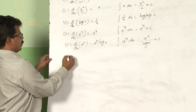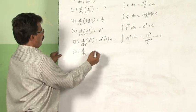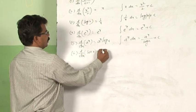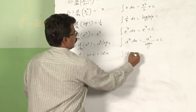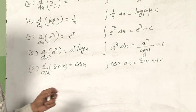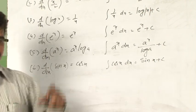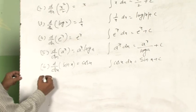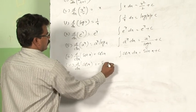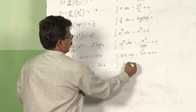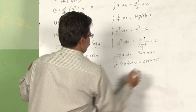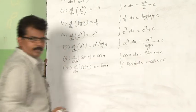Next, d by dx of sin x is equal to cos x. Therefore, integral of cos x dx is equal to sin x plus c. Recall that the derivative of cos x is minus sin x. So d by dx of cos x is equal to minus sin x. Therefore, integral of sin x dx is equal to minus cos x plus c.